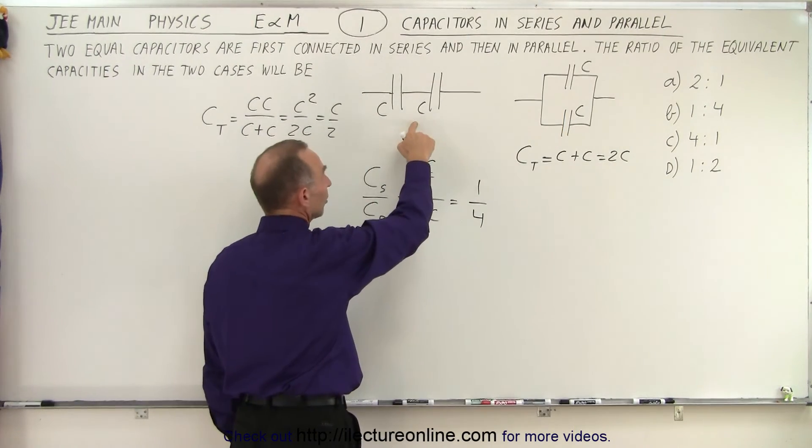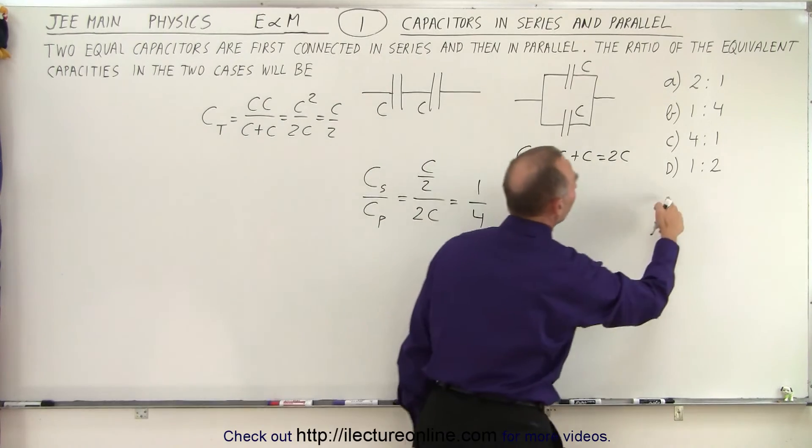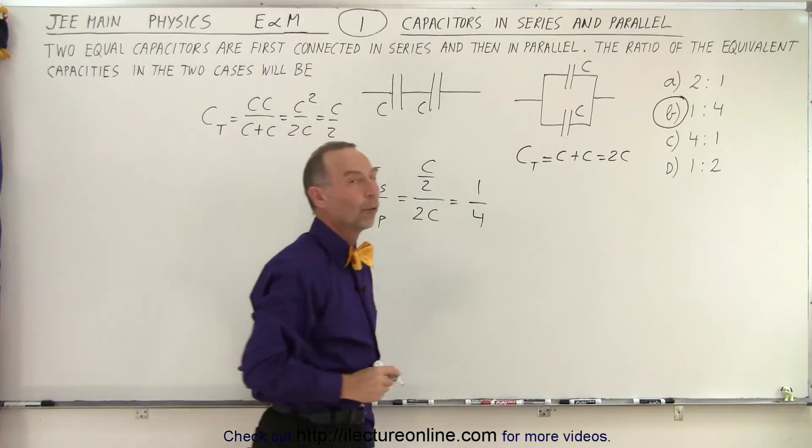So essentially, you can think of it half and double. So half divided by 2 is 1 fourth. And so the correct answer is B, 1 to 4.